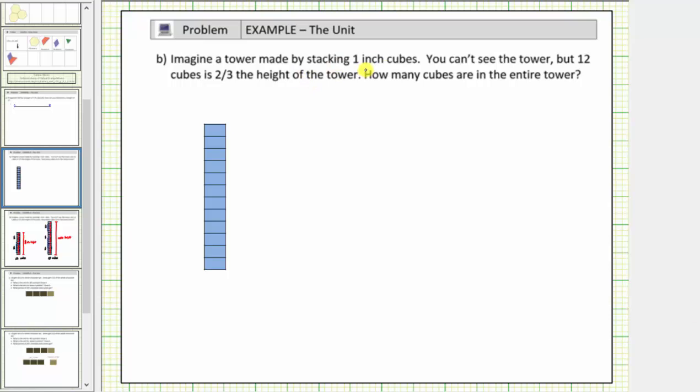Imagine a tower made up of stacking one inch cubes. You can't see the tower, but twelve cubes is two-thirds the height of the tower. How many cubes are in the entire tower?